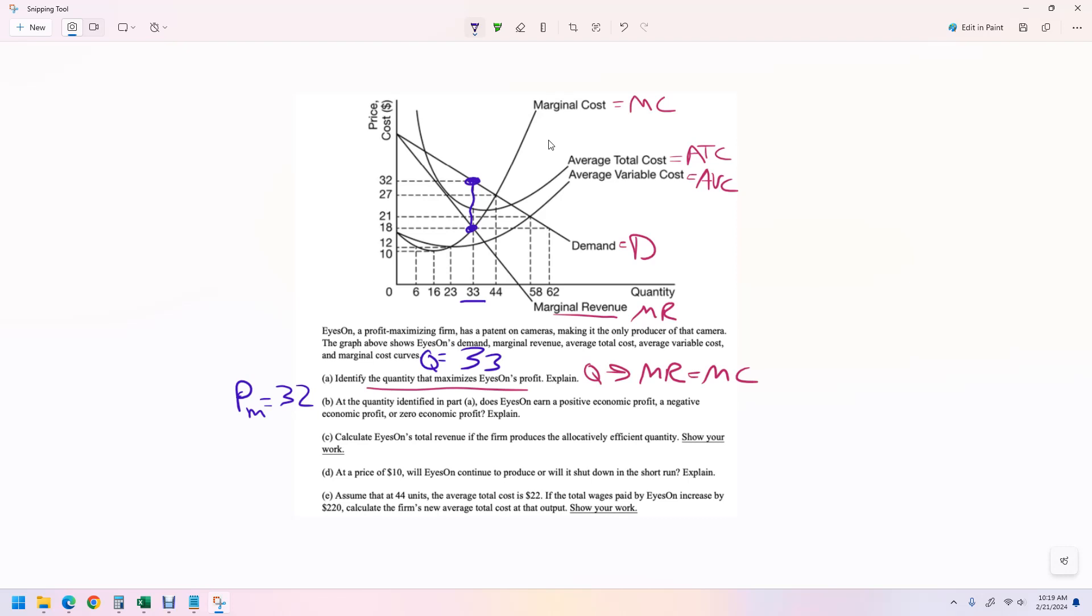The quantity is 33. And the next question asks, are they earning a positive profit, negative economic profit, or zero economic profit? They are earning a positive profit because price is greater than average total costs. If you were asked to shade the profit, which we're not asked to do, but just in case, you want to start up here and then follow it down to where that hits average total cost. So it's the distance between here and here. We don't have that number right there, so we can't exactly say what the profit is, but we know they're earning a profit because price is higher than average total cost.